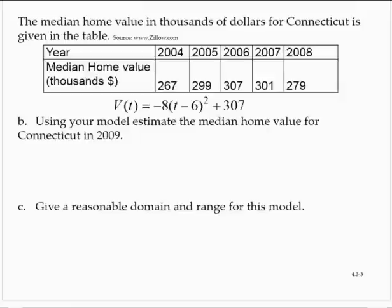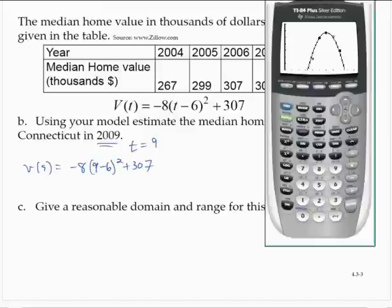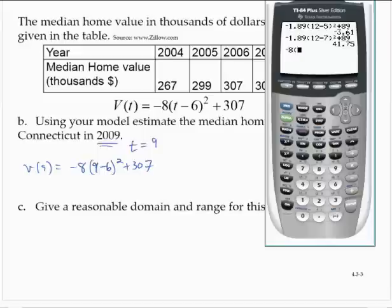Using your model, estimate the median home value for Connecticut in 2009. Well, 2009 means that t is equal to 9. And so we'd have v of 9 is negative 8 times 9 minus 6 squared plus 307. I'll use the calculator here. So negative 8 times 9 minus 6 squared plus 307 is 235.